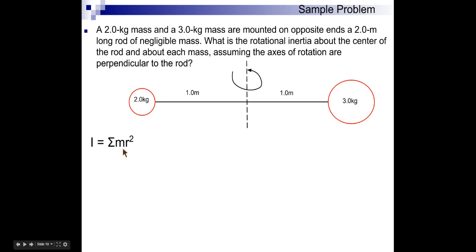Okay, so there's our equation. We're going to take each object, multiply it times its radius, and then do the same with other objects, add them together. So, M1, let's call this M1, and let's call that M2.